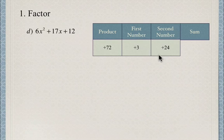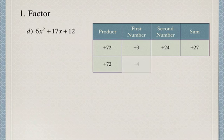Next, 3 times 24 equals 72, and 3 + 24 = 27, which is too high. Then 4 times 18 equals 72, and 4 + 18 = 22, still too high.